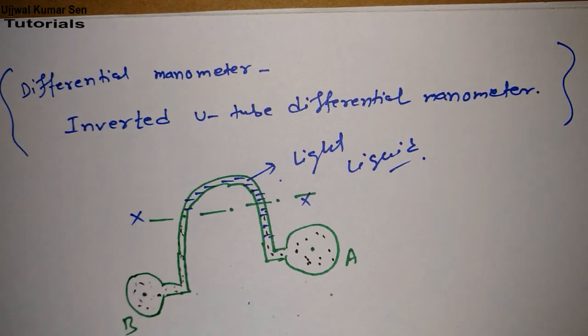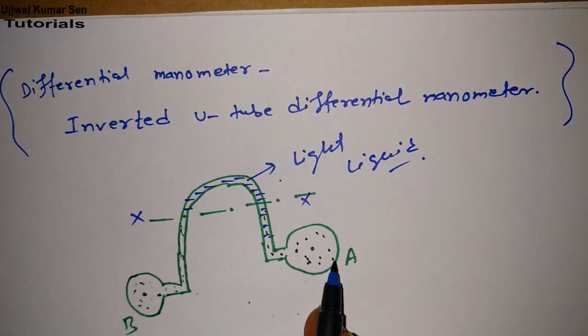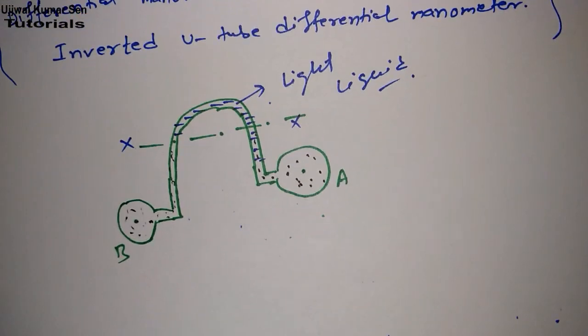For finding out pressure difference at point B and point A, what do we need to do? We need to follow the equation. For writing down the equation, we have to write some language.